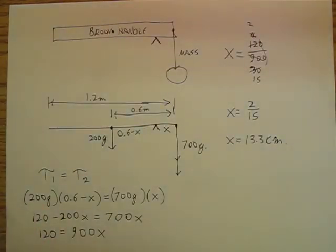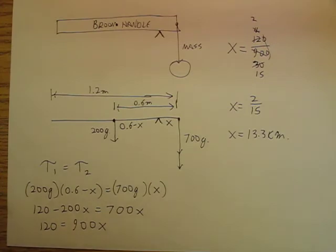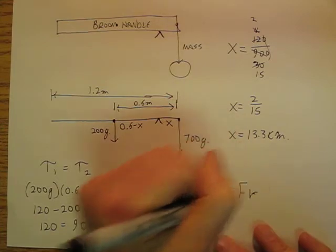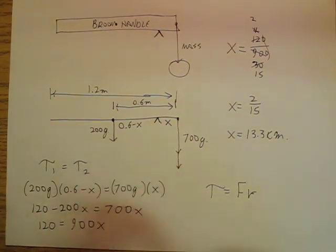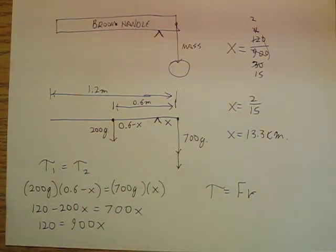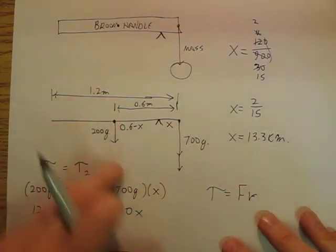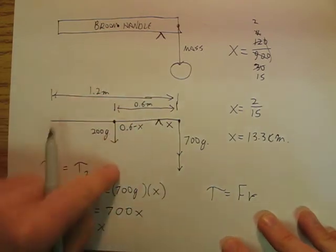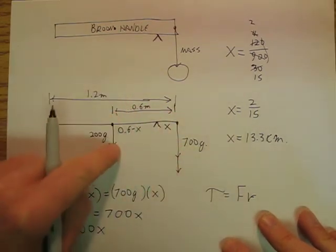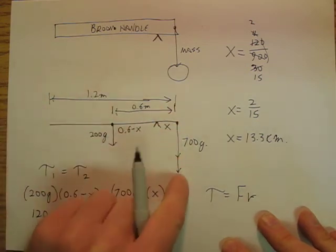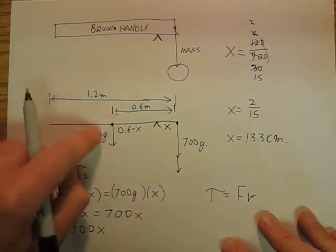So torque is force times radius. That should be a whole chapter all by itself. It should not be one section of a chapter that just ends up getting one video. If I do this out, if there's no rotation, it means that torque 1 equals torque 2.